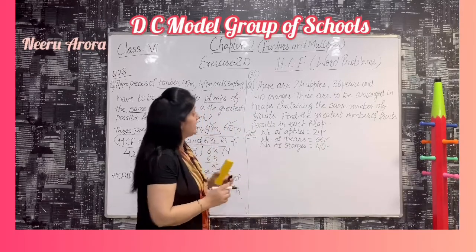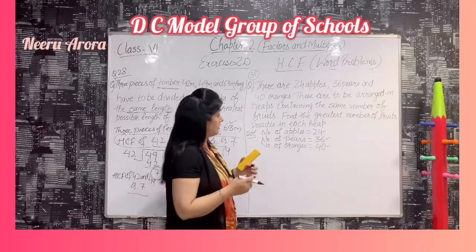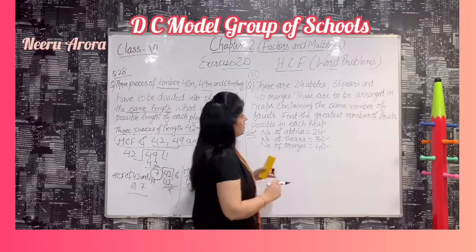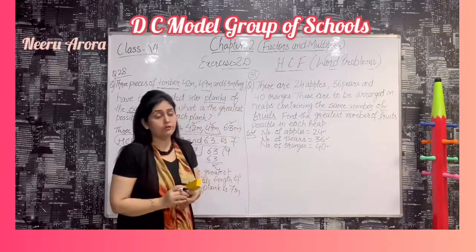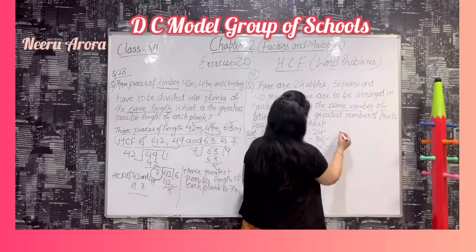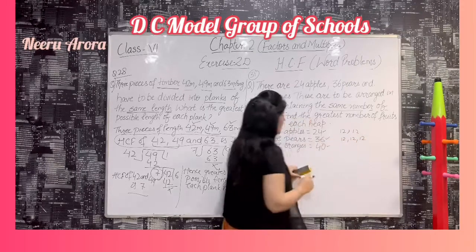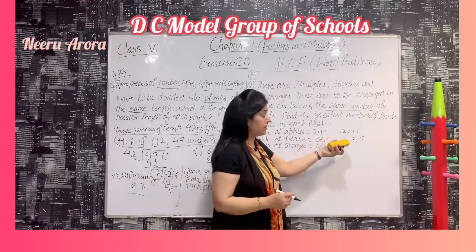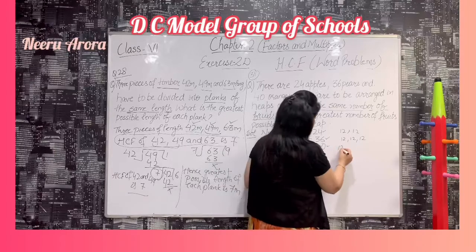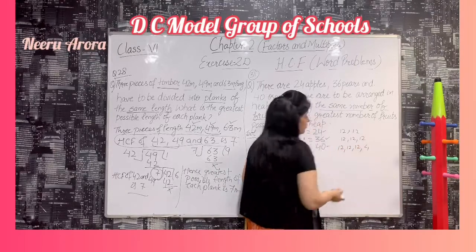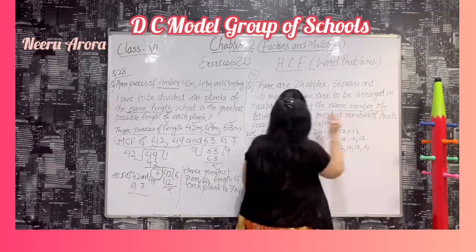We want to arrange these in heaps — small piles. But the condition is that in each heap there will be the same number of fruits. Suppose we make heaps of 12: 24 gives 2 heaps of 12, and 36 gives 3 heaps of 12. But 40 divided by 12 leaves 4 remaining, so it does not fulfill our condition of the same number of fruits.